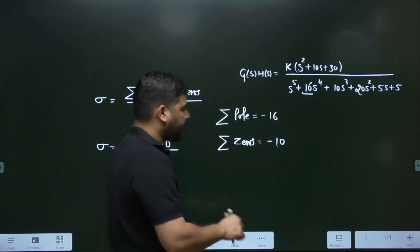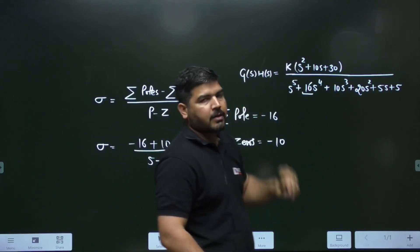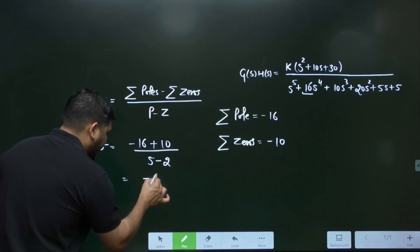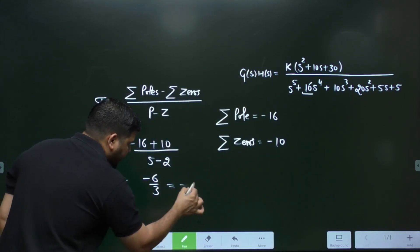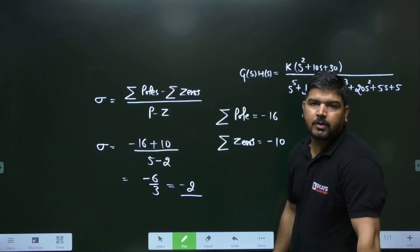Now, how many poles are there? Poles are 5 and zeros are 2. You can see the power. And there you can calculate: it will be minus 6 divided by 3. So centroid came out to be minus 2. So at minus 2, you will get the centroid.